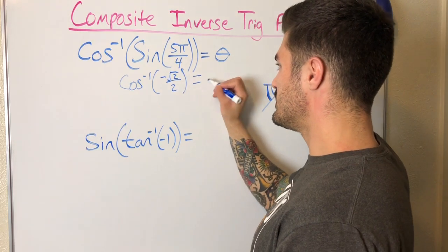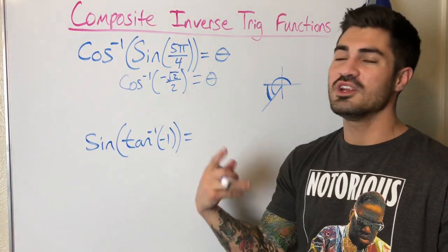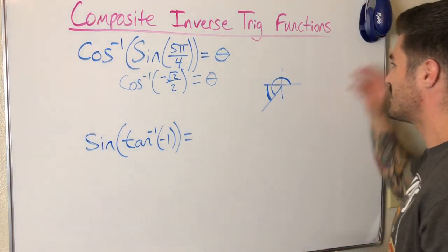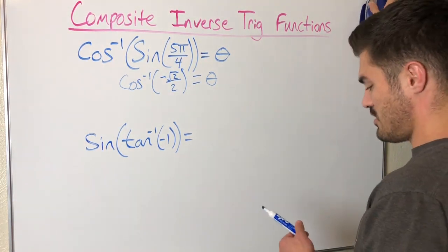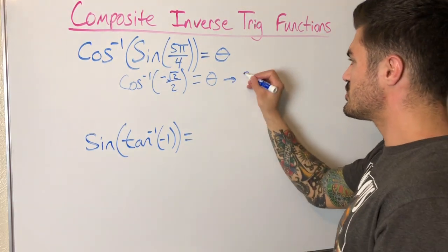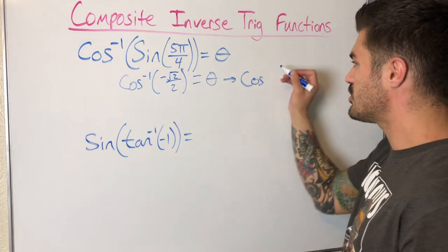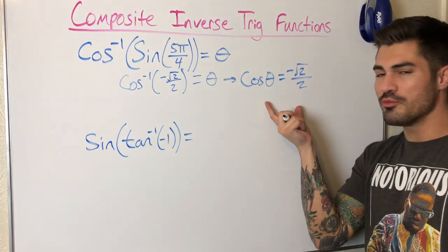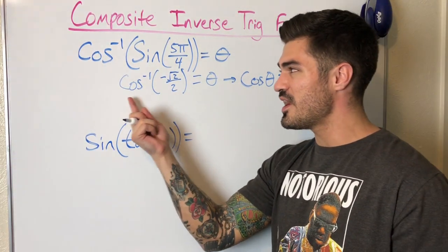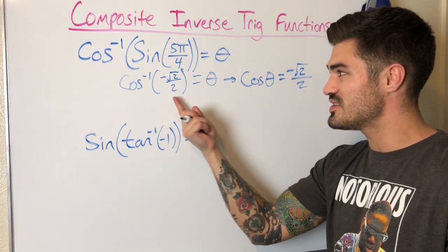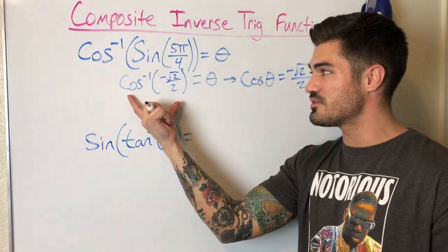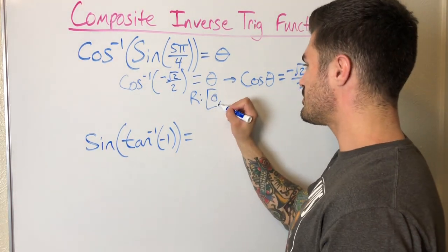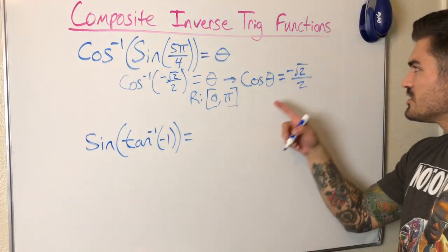What I'm really looking at here is cosine inverse of negative √2/2, and this is still some angle theta. I can use my definition of what it means to be an inverse function — I switch the input and output and write it as just regular cosine. So this is like saying: cosine of what angle equals negative √2/2. But remember, the output has to be within the range of inverse cosine.